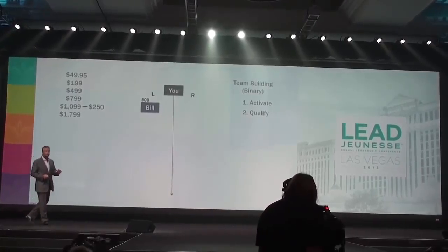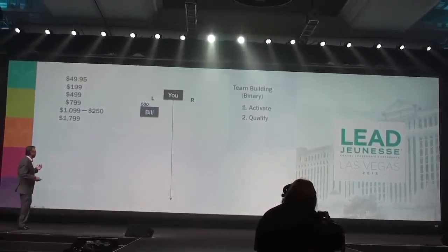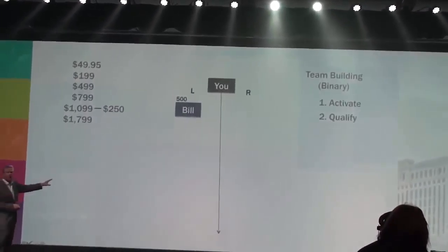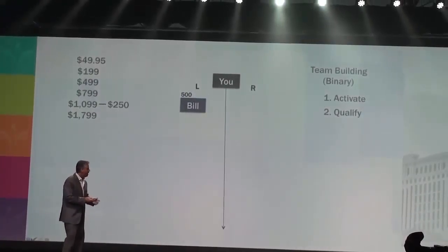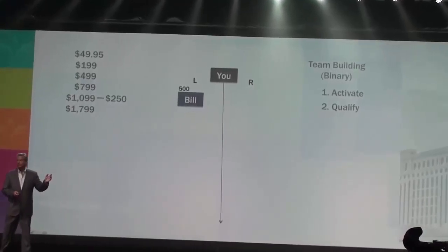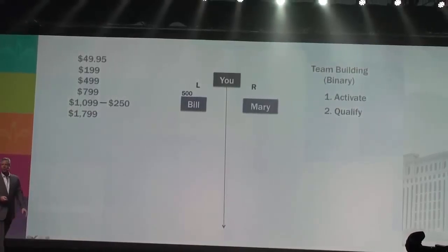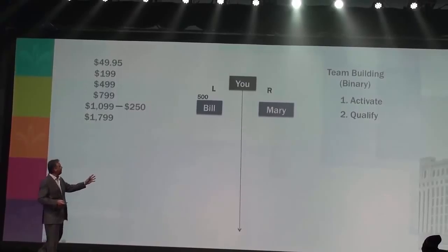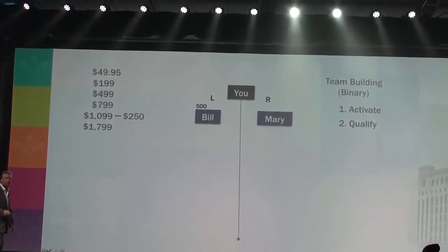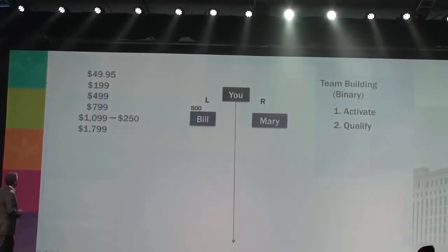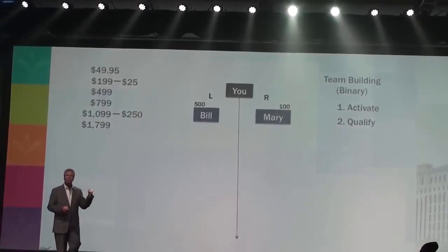The second thing everybody has to do is qualify. What does that mean? You personally sponsor one friend, place them on the left team who activates, and one friend on the right team. So you're shooting out those two-minute videos on Instantly Ageless, your phone's ringing off the hook, and your friend Mary wants to join the business. She goes to your website, signs up, and you place Mary on your right team. Mary activates and orders the basic pack for $199.